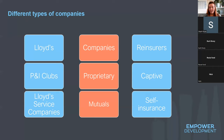A captive might be a really big company — like Marks and Spencer — that decides to create an insurance company to insure themselves and keep it all in-house. These types of companies are usually situated offshore due to tax efficiencies. A Lloyd's service company is an approved coverholder that obtains authority from a syndicate to write business on behalf of the syndicate. We also have self-insurance, where an insured decides to insure part or all of a risk themselves.